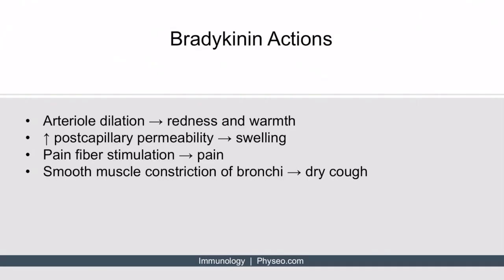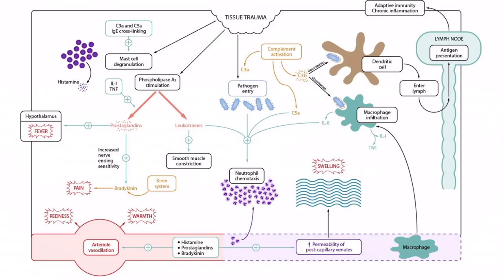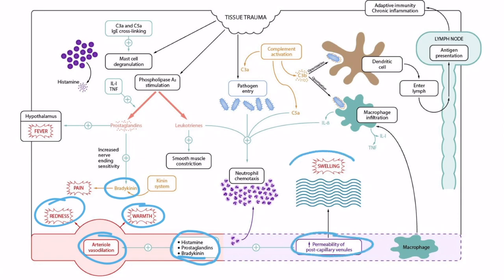Now that we know how to get bradykinin, there are a few things to remember about what bradykinin does. It can cause arterial dilation, leading to cardinal symptoms such as redness and warmth. Bradykinin also increases post-capillary permeability, causing the cardinal symptom of swelling. It also causes pain fiber stimulation, producing the cardinal symptom of pain. Just like histamine and prostaglandins, bradykinin causes arterial vasodilation and increased permeability of the post-capillary venules, and it stimulates the nerves to increase the sensation of pain.